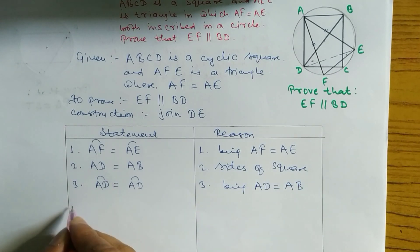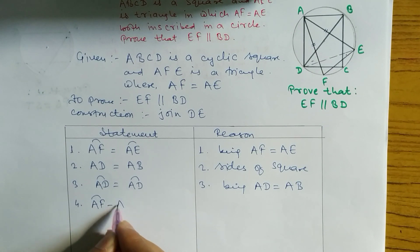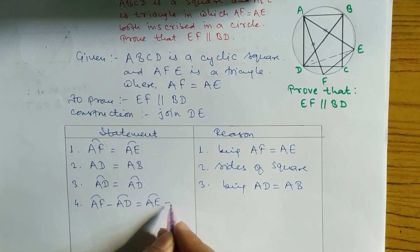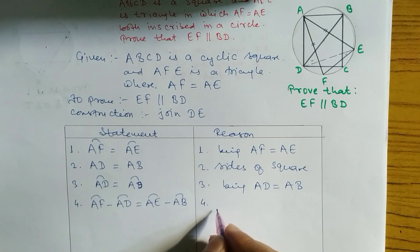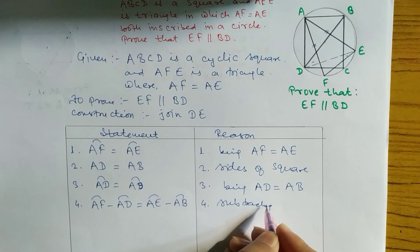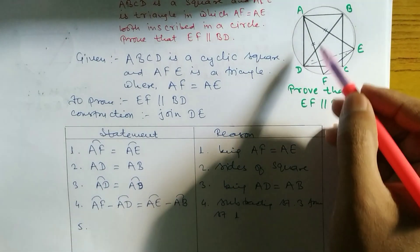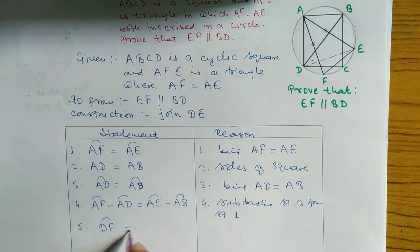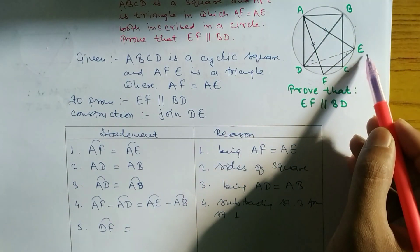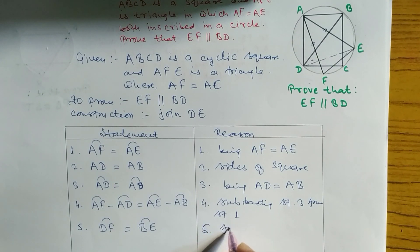In step four, we subtract statement three from statement one. Arc AF minus arc AD gives arc DF, and arc AE minus arc AB gives arc BE. So arc DF equals arc BE. This is statement four — subtracting statement three from statement one.